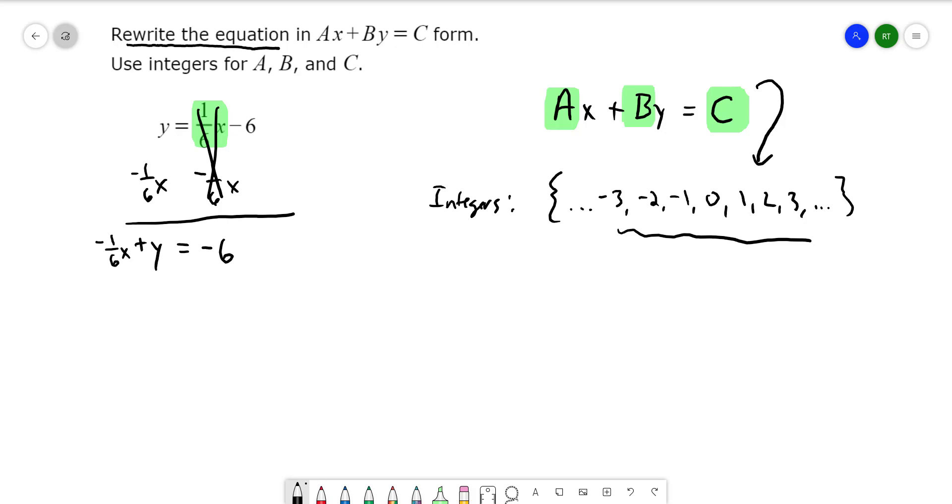So we are close to standard format. We have the X term and the Y term on the left, and then the constant, the number without the variable, is on the right. The only thing we have left is to rewrite it without a fraction. And the way we can do that is you look at your denominator, which in this case is six. And we're going to multiply every single term in this equation by that denominator, which is six.